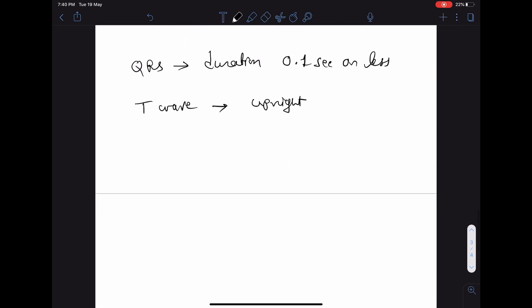Now coming to the PR interval. The normal duration of PR interval is from 0.12 second to 0.2 second. There are conditions where PR interval becomes shortened, or there are other conditions where PR interval becomes widened.